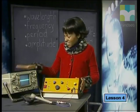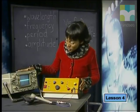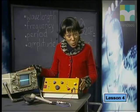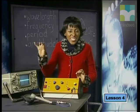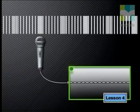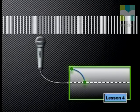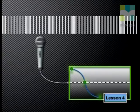When a detector like the oscilloscope is used to detect a sound wave, it detects change in pressure as the sound wave strikes the detecting device. At one instant in time, the detector might detect a high pressure — this would correspond to the arrival of a compression. The next instant, the detector might detect normal pressure, and then finally a low pressure would be detected, corresponding to the arrival of a rarefaction.